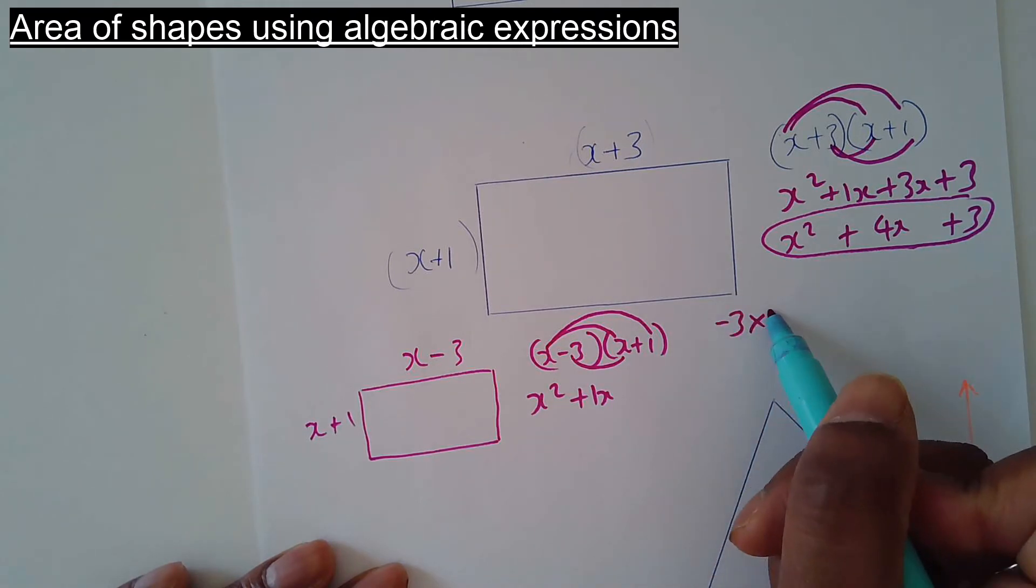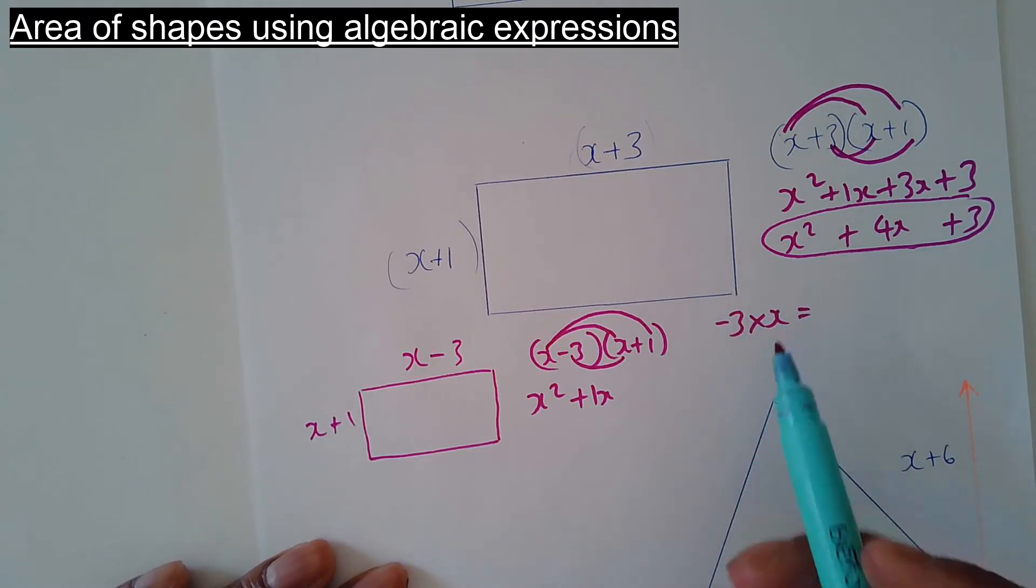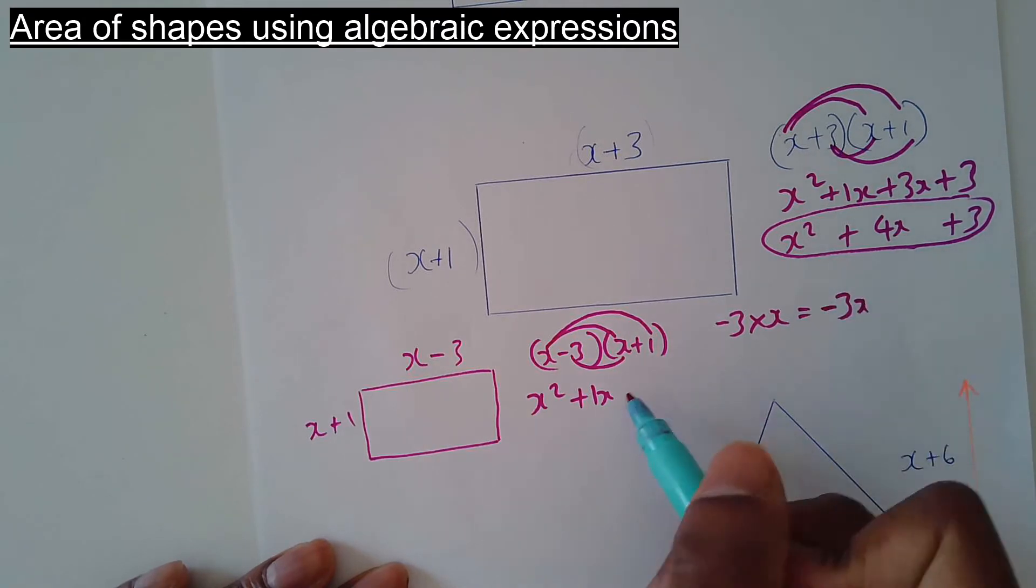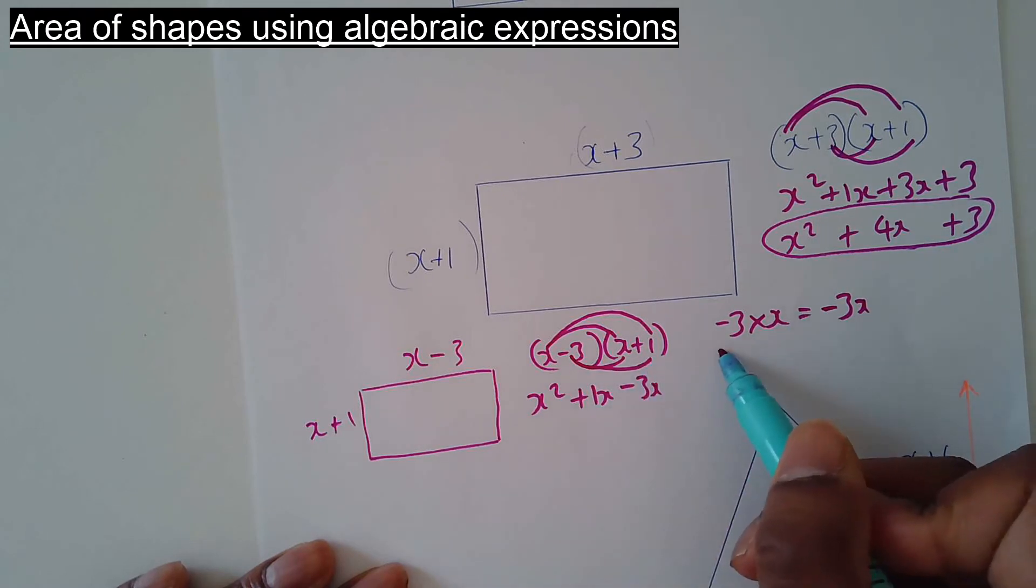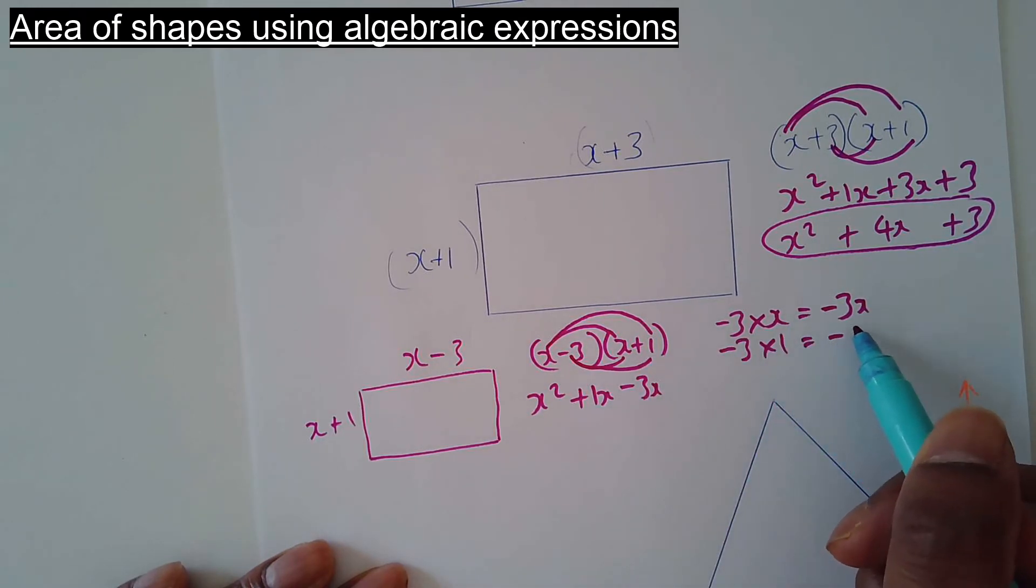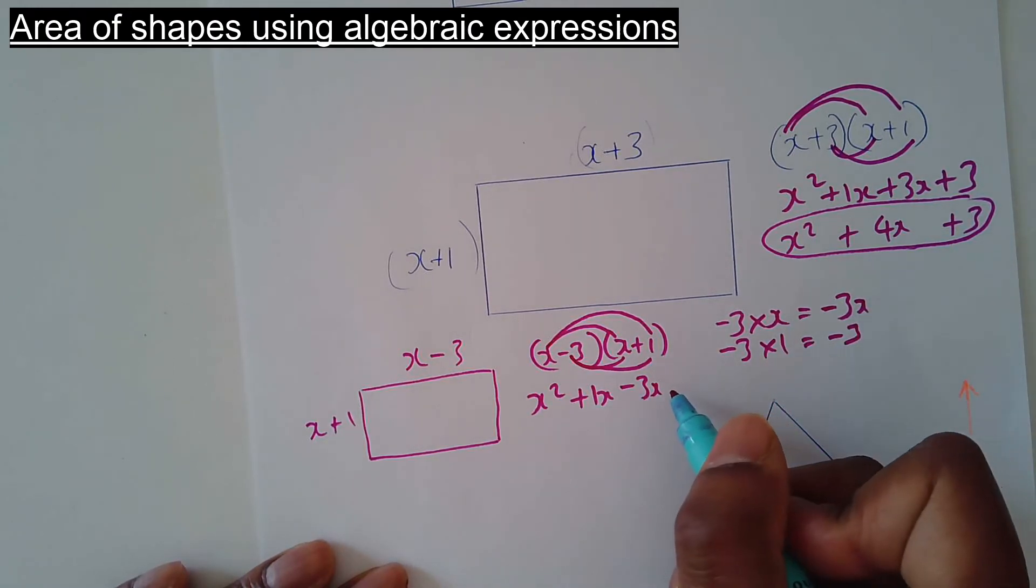So that's minus 3 times x. Minus 3 times x. Negative times positive. Well, negative wins. So that'll be negative 3x. Then negative 3 times 1. Negative 3 times 1 is negative 3.